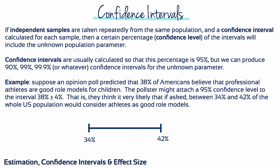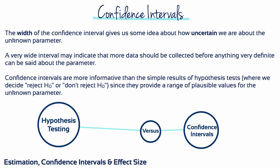We can produce confidence intervals using any level of confidence: 90%, 99%, 99.9%, whichever we choose. For example, suppose an opinion poll predicted that 38% of Americans believe that professional athletes are good role models for children. The pollster might attach a 95% confidence level to the interval 38% plus or minus 4%, meaning they think it's very likely that between 34% and 42% of the whole US population consider athletes as good role models. The width of the confidence interval gives us some idea about how uncertain we are regarding the unknown parameter. Confidence intervals are more informative than the simple results of hypothesis tests, since they provide a range of plausible values for the unknown parameter.